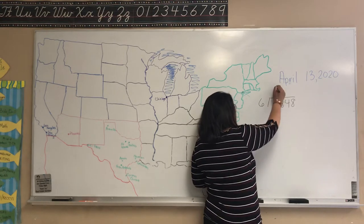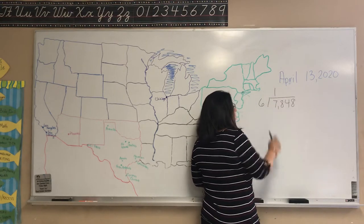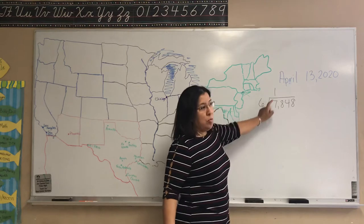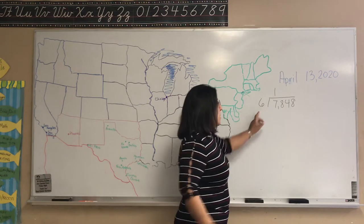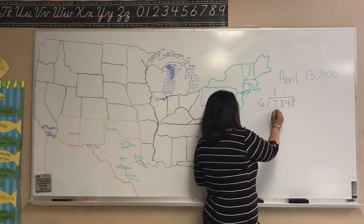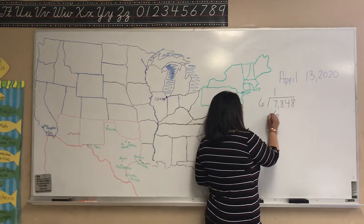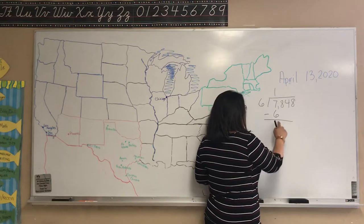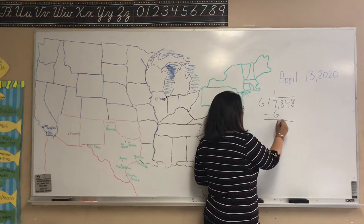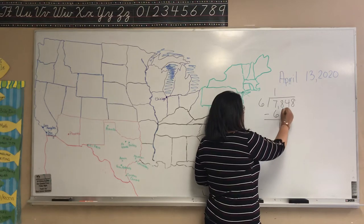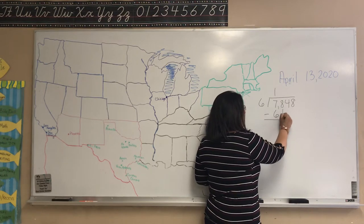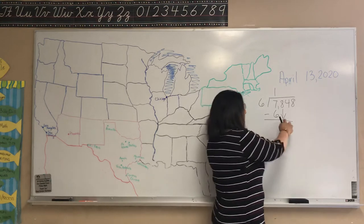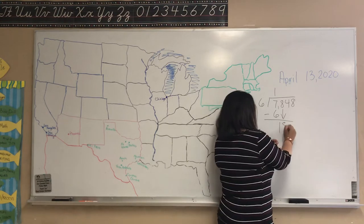Six will go into seven one time. Then you have to go back and multiply — one times six is six. You're going to subtract. Seven take away six is one. You're bringing down your eight, and you have to remember to put that arrow there.